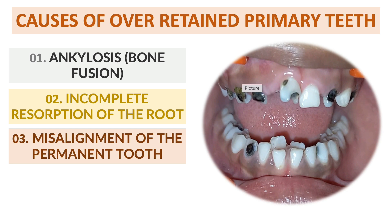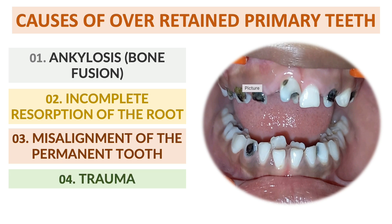A third cause is misalignment of the permanent tooth. If the permanent tooth is erupting at an improper angle or position, or is stuck under the jaw bone, there may not be enough pressure to push the primary tooth out. A fourth cause is trauma or injury to the tooth root or nerve, which can also delay formation of the permanent tooth.